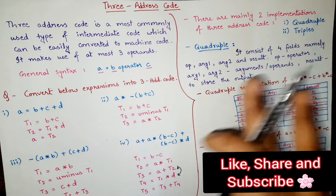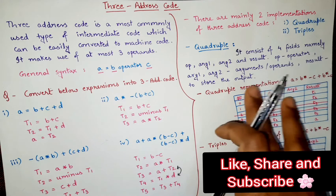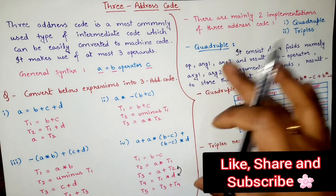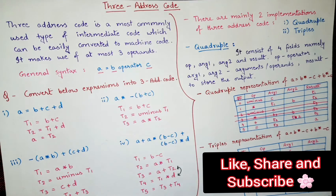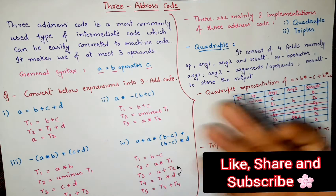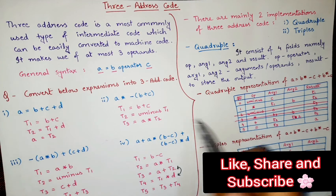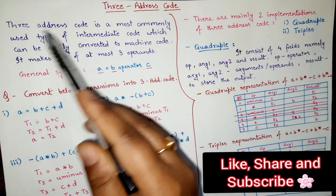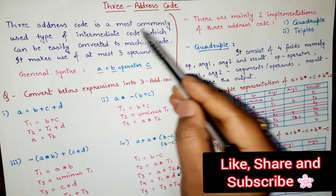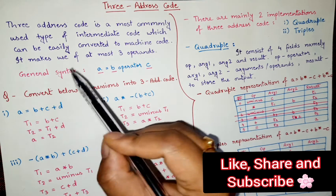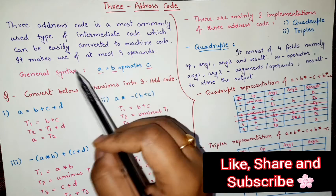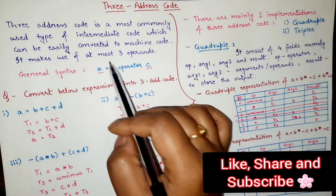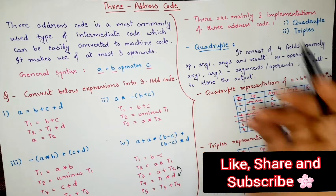So without wasting any more time, let's start. What is 3 address code? 3 address code is the most commonly used type of intermediate code which can be easily converted to machine code. It makes use of at most 3 operands.